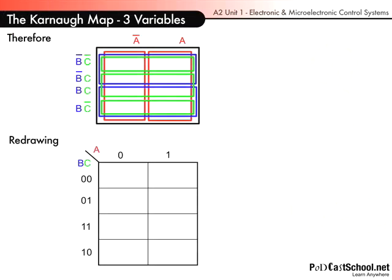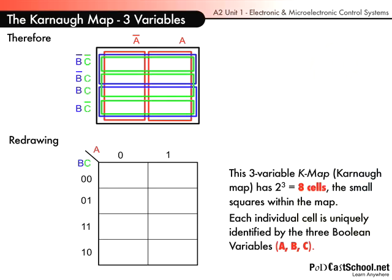Again, we can draw the table out and rearrange it into a Karnaugh Map form. And this is just what I explained earlier. Now there's no reason whatsoever why you couldn't have had A, B up here and C by itself, and had the Karnaugh Map four cells wide and two tall. There's no reason why you couldn't do that. I've just said there that the three variable Karnaugh Map has two to the three or eight cells, the small squares within the map.